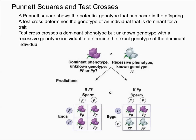Both homozygous dominant and heterozygous will give you a purple flower phenotype. So the purpose of this test cross is to determine if the individual with the dominant phenotype — in this case a purple flower — is homozygous dominant or heterozygous. To do this, you cross it with a recessive phenotype, so you know it has two lowercase p's and you know the phenotype of the recessive individual, in order to determine the exact genotype of the dominant individual.